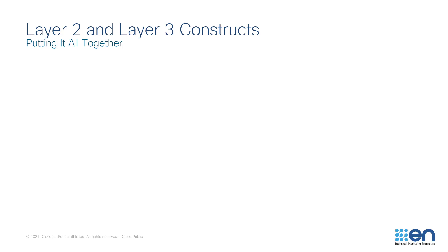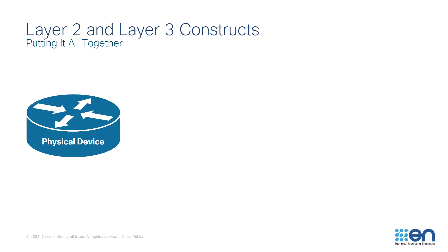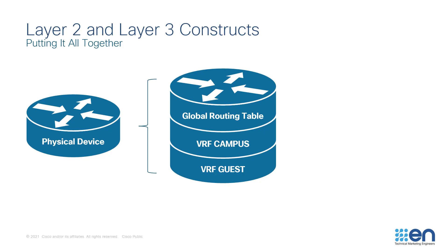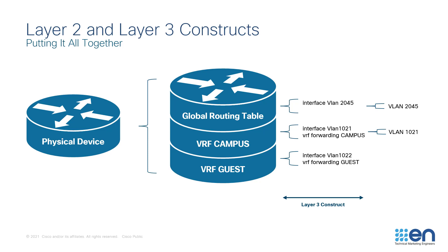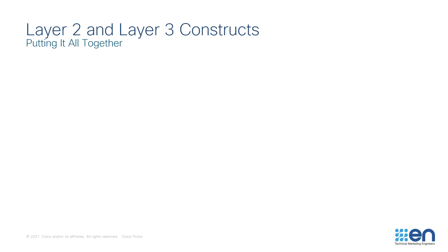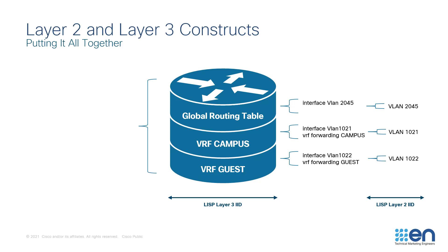We have VRFs and VLANs along with LISP Layer 3 and LISP Layer 2 Instance IDs — these are the concepts introduced so far. Let's put it all together. We start with a physical device and carve that into different routing tables or VRFs. When an interface is enabled, you configure it to forward for a given VRF. If the VRF is not explicitly defined, that interface is forwarding for the global routing table. When the interfaces are SVIs, or switched virtual interfaces, they have a corresponding VLAN. For example, interface VLAN 1022 — the Layer 3 construct — is associated with VLAN 122, the Layer 2 construct. This is how your VLAN becomes associated with the VRF, and how the LISP Layer 2 Instance ID has a correlation to the LISP Layer 3 Instance ID.